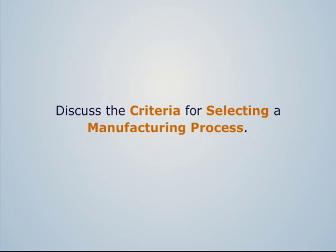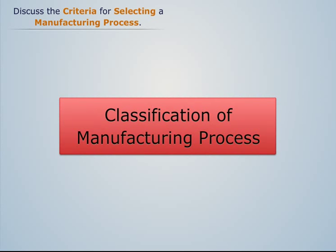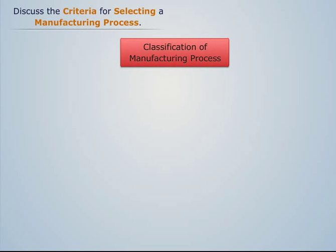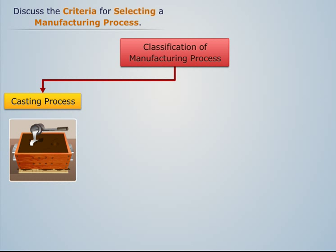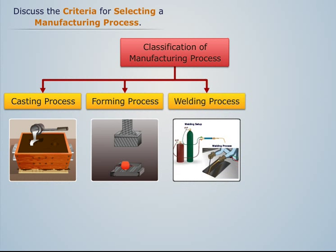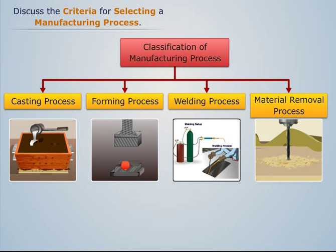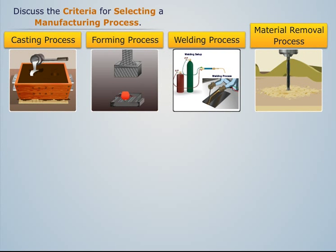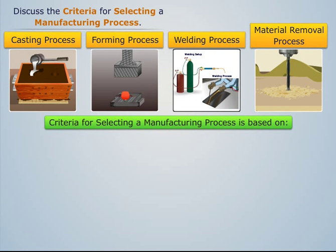We will discuss the criteria for selecting a manufacturing process. A manufacturing process is classified as casting process, forming process, welding process, and material removal process. While selecting any of these processes, a manufacturer needs to take certain factors into consideration.